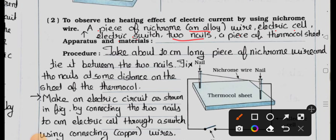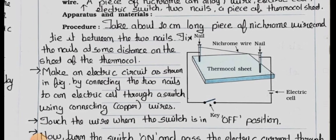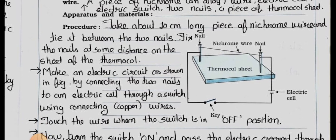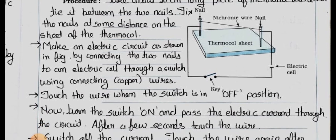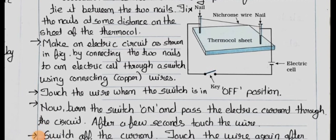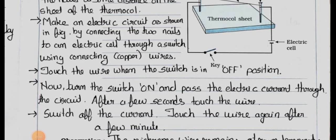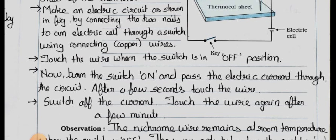Apparatus and materials: a piece of nichrome alloy wire, electric cell, electric switch, two nails, a piece of thermocol sheet. Procedure: Take about 10 cm long piece of nichrome wire and tie it between the two nails. Fix the nails at some distance on the sheet of thermocol. Make an electric circuit as shown in the figure by connecting the two nails to an electric cell through a switch using connecting copper wires.